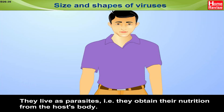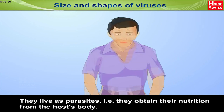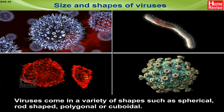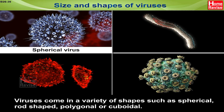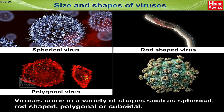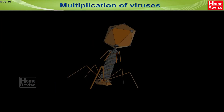Viruses live as parasites; they obtain their nutrition from the host's body. They either have DNA or RNA as genetic material coated with protein. Viruses come in a variety of shapes such as spherical, rod-shaped, polygonal or cuboidal.